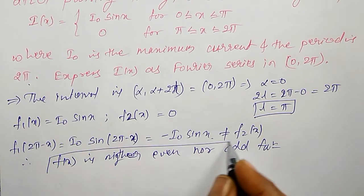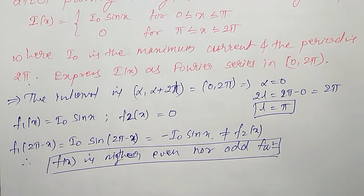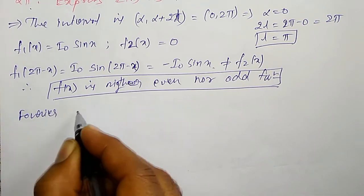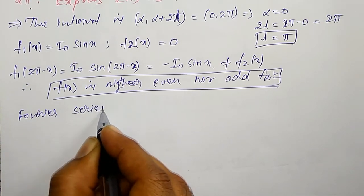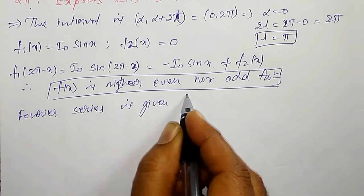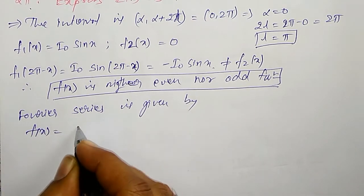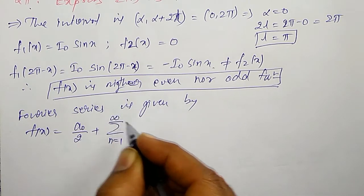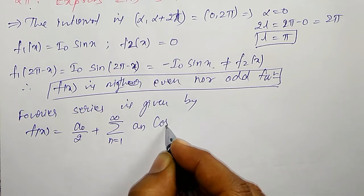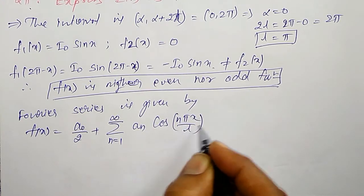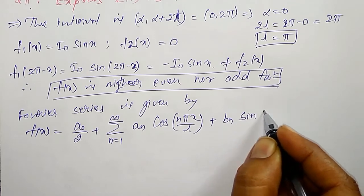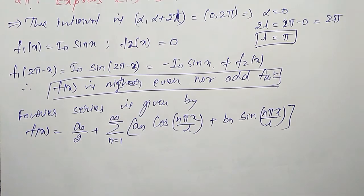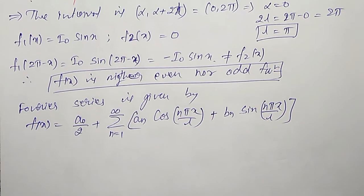Therefore all three Fourier coefficients must be evaluated one by one. The Fourier series is given by F(x) = A₀/2 + Σ(n=1 to ∞) [Aₙ cos(nπx/l) + Bₙ sin(nπx/l)]. In this, A₀, Aₙ, and Bₙ have to be calculated.